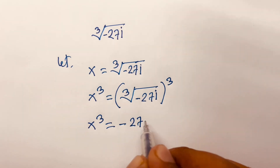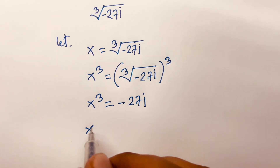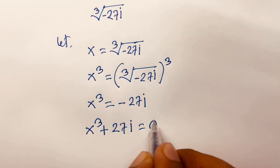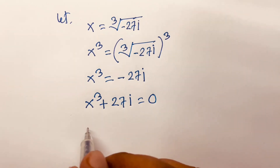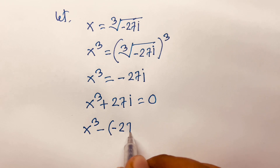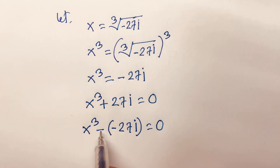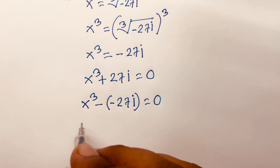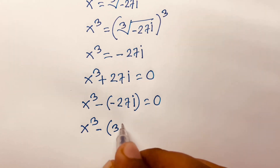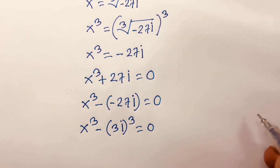This equation becomes x cubed plus 27i equals 0. We can rewrite this as x cubed minus (minus 27i) equals 0. Because minus minus becomes plus, this becomes x cubed minus (3i)³ equals 0.